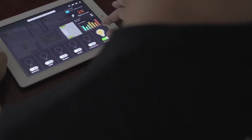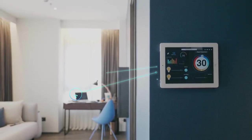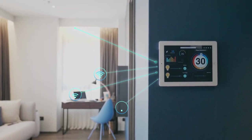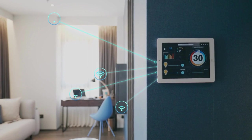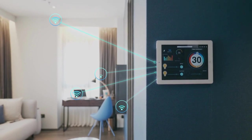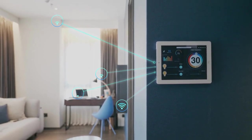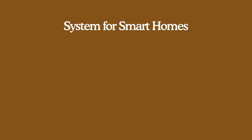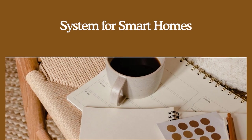Once connected, IoT technology — a network of physical items that can gather and share electronic information — includes services like a smart doorbell, a smart security system, and smart appliances for smart homes.